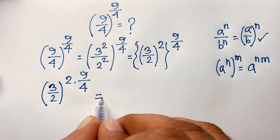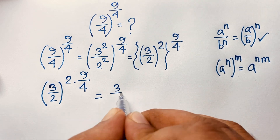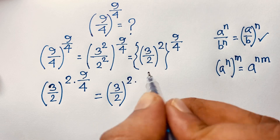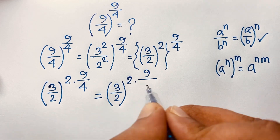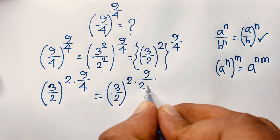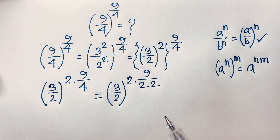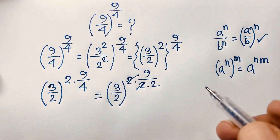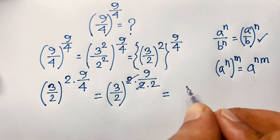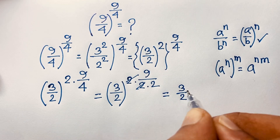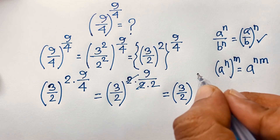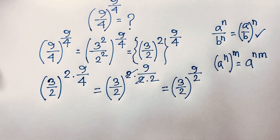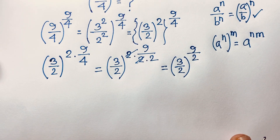So the expression is (3/2) to the power of 2 times 9 over 4, which gives 2 times 9 over 2 times 2. These two 2s cancel out, and we find (3/2) to the power 9/2.